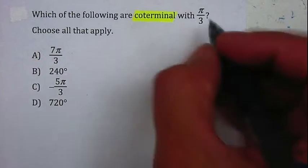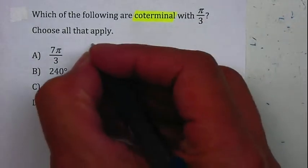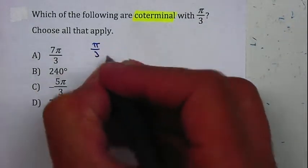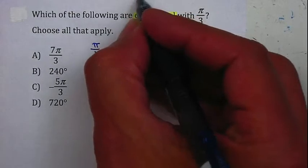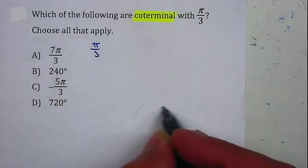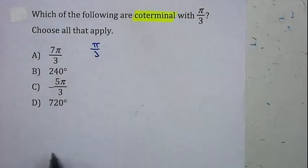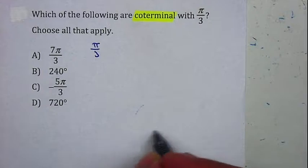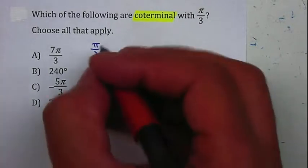So therefore, let's work with radians first, π over 3. To find coterminal angles, that means we need to be able to go all the way around so we can land on the same location. And all the way around in radians is equal to 2π.